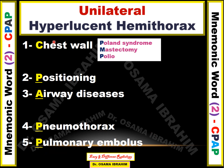Chest wall diseases which can cause unilateral hyperlucent hemithorax include Poland syndrome, mastectomy, and polio — remembered also by the mnemonic PMP.